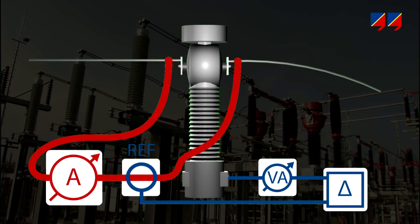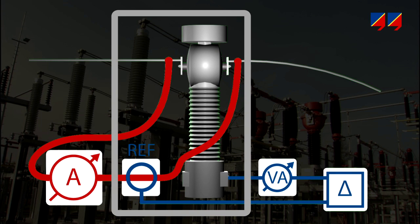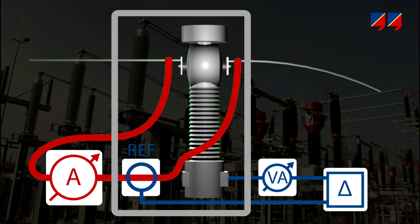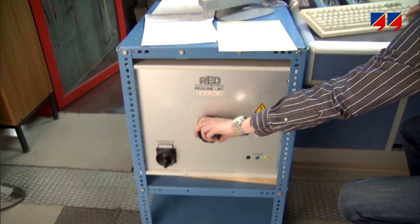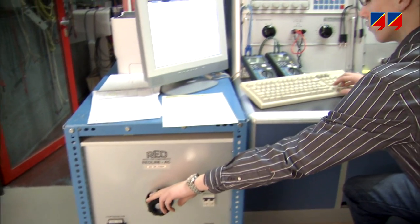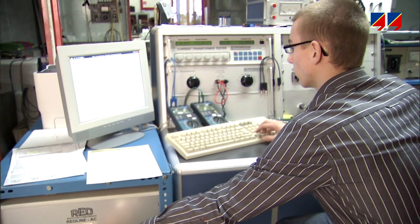If a CT is to be comprehensively tested in a classical manner, the current bridge method is used. Through a high current source, defined values of primary currents — from fractions to multiples of rated current — are injected into a reference CT and the CT under test, which is connected to a controllable burden box to simulate different load conditions. Via a measurement bridge, the output currents from both CTs are compared in amplitude and phase. With this method, all current and burden value combinations defined by the relevant international standards can be verified and the CT's compliance can be assessed.